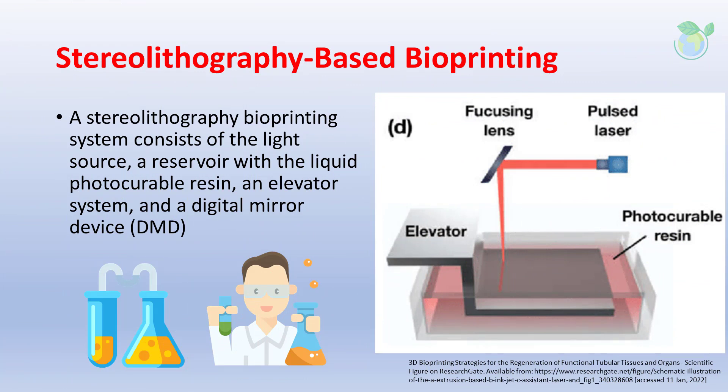A stereolithography bioprinting system consists of a pulsed light source where a focusing lens will fabricate within the photo-curable resin. 3D bioprinting with this approach is still challenging due to cytotoxicity of the photo-curable resins and high cost for system installation. Biocompatible photo-curable materials have been widely used to manufacture complex architecture and sacrificial molds.